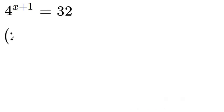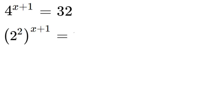So what we're gonna do is rewrite 4 as 2 squared and 32 as 2 to the power of 5. The reason we're doing that is so that our exponents have the same base and we will see why that's important in a minute.